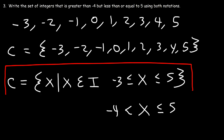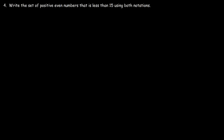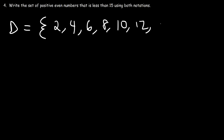Now you know how to describe a set using set-builder notation or the roster method. Number 4: write the set of positive even numbers that is less than 15 using both notations. Let's use D as the name of the set and start with roster notation. Even numbers that are positive: 2, 4, 6, 8, 10, and we stop at 14 because it has to be less than 15 — and 15 is an odd number. So this is the list in roster notation.